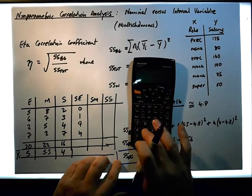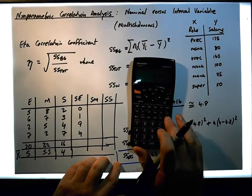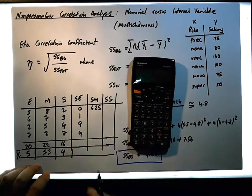5g squared, let's see. So we have 2.5 squared is going to give us a value of 6.25, 6.25.